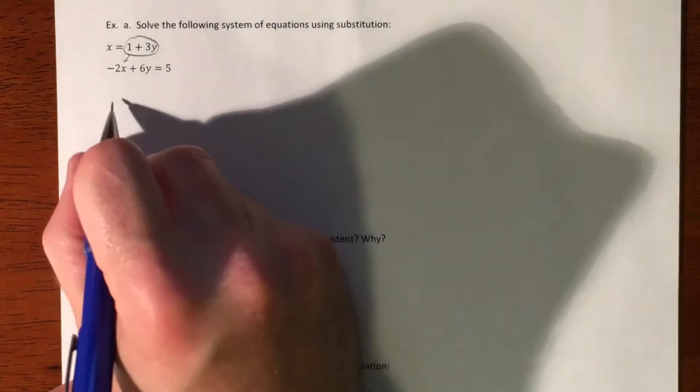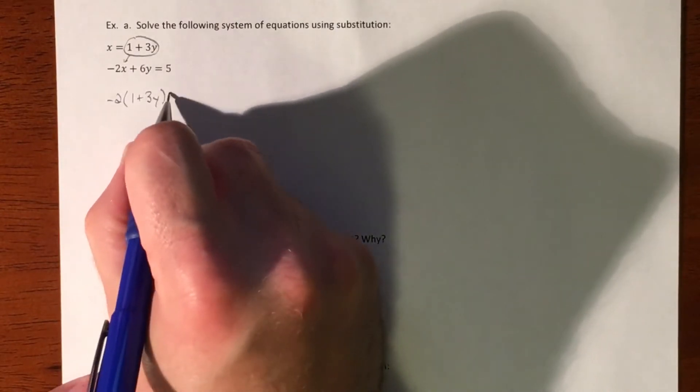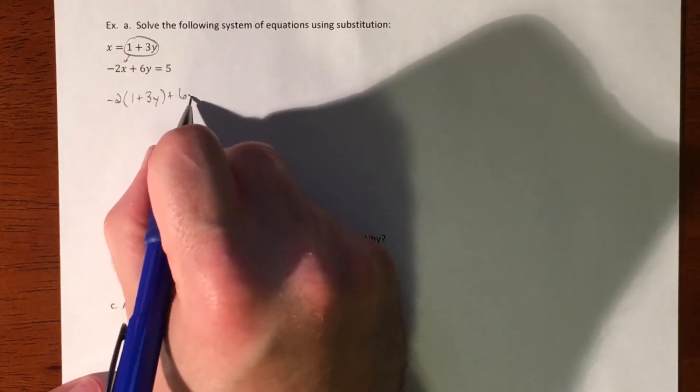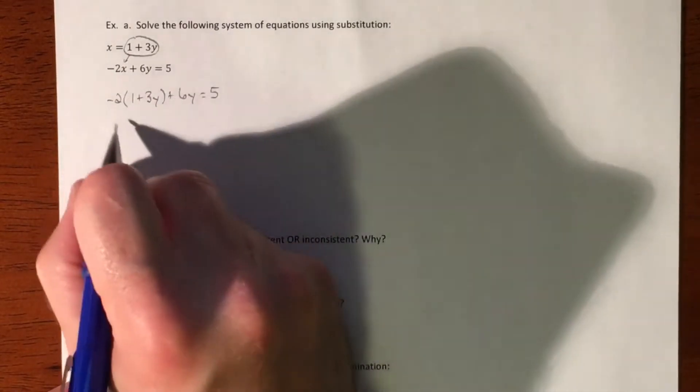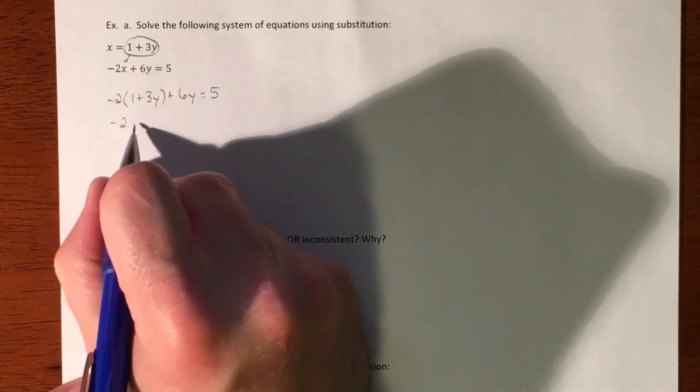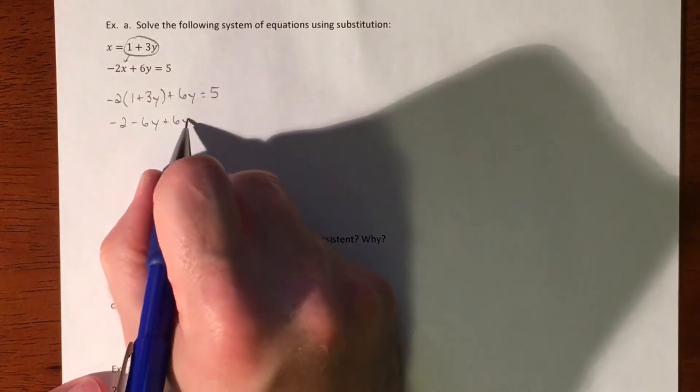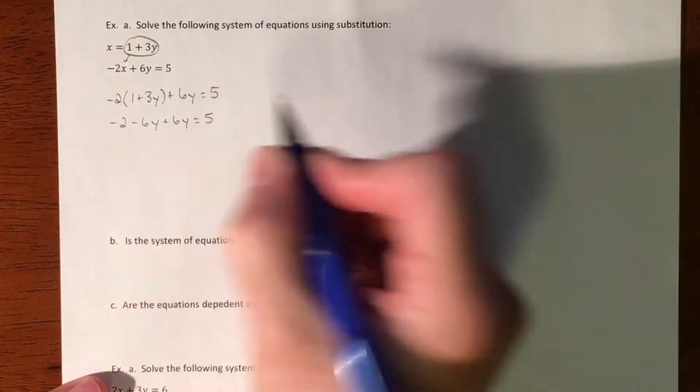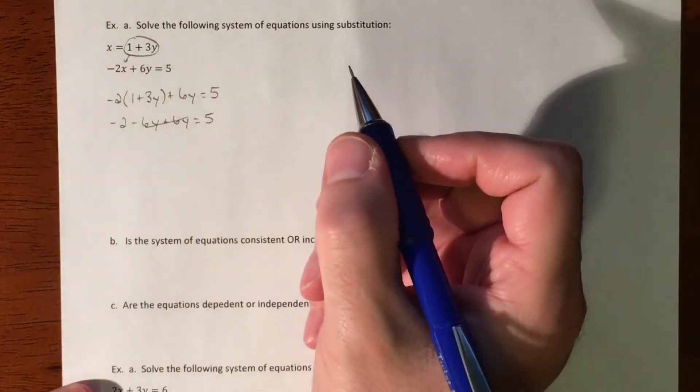So I will get negative two times one plus three y, plus six y equals five. The only thing that changed was our x got replaced with what x equals, and then we distribute. So negative two minus six y plus six y equals five. Now the y's just went away and we didn't do anything wrong.